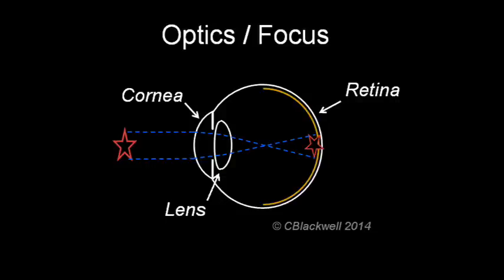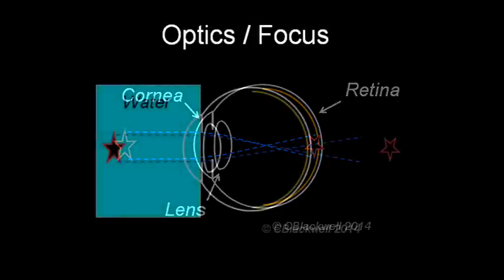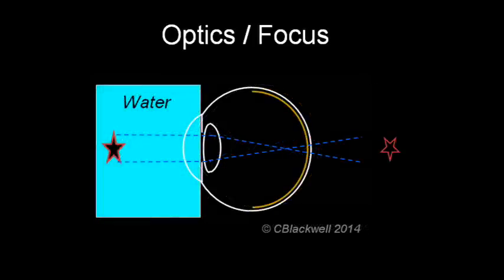To give you a feeling for the focusing power of the cornea, consider what happens when you open your eyes under water. Everything becomes very out of focus. The air-to-tear interface is lost, so no light bending occurs and two-thirds of your focusing power is gone.